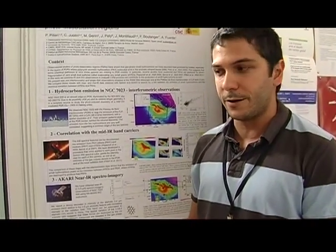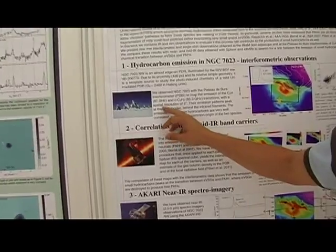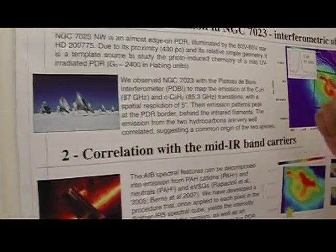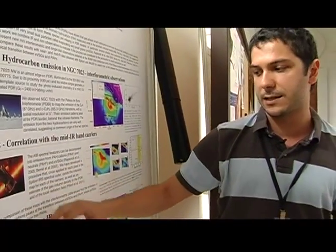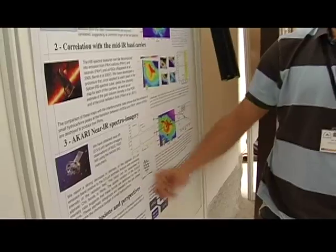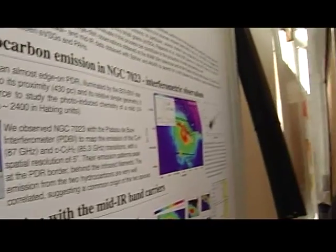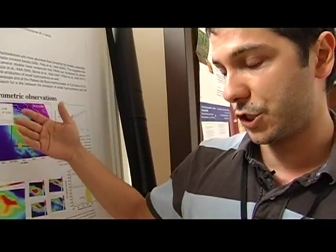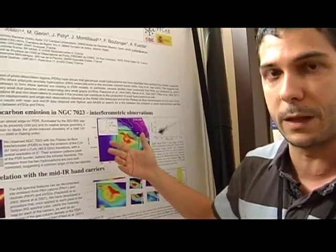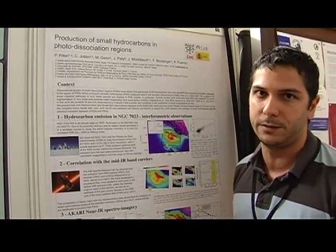To do this, we combine observations at different wavelengths obtained with ground-based observatories and with space observatories like the Spitzer telescope and the Akari Japanese telescope. The conclusion of our work is that PAH molecules may be a source of small hydrocarbons in this kind of region.